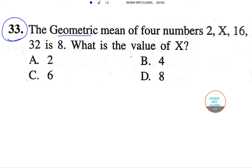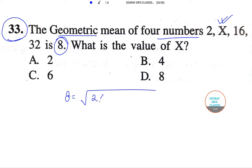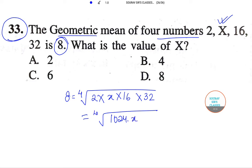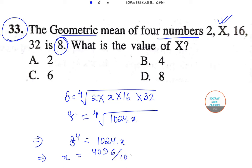We will start with question number 33. It says the geometric mean of four numbers is given to be eight, and these are the four numbers — we need to determine the value of x. Using the formula, the geometric mean is the fourth root of 2 times x times 16 times 32, which equals the fourth root of 1024x. Setting this equal to 8, we raise both sides to the power of 4: 1024x equals 8 to the power of 4, which is 4096. Solving, x equals 4096 divided by 1024, which is 4. The correct answer is option B.